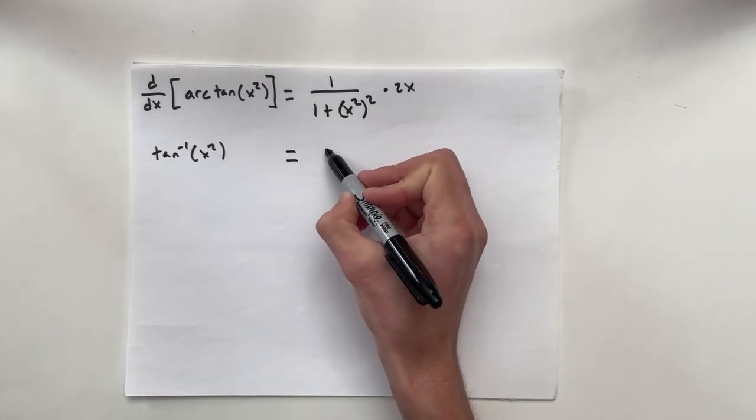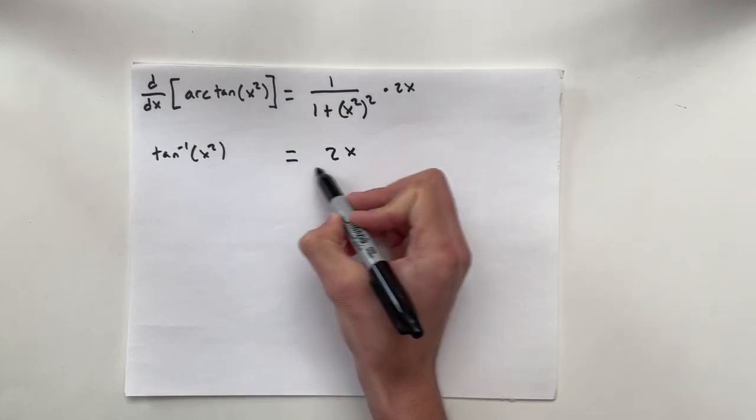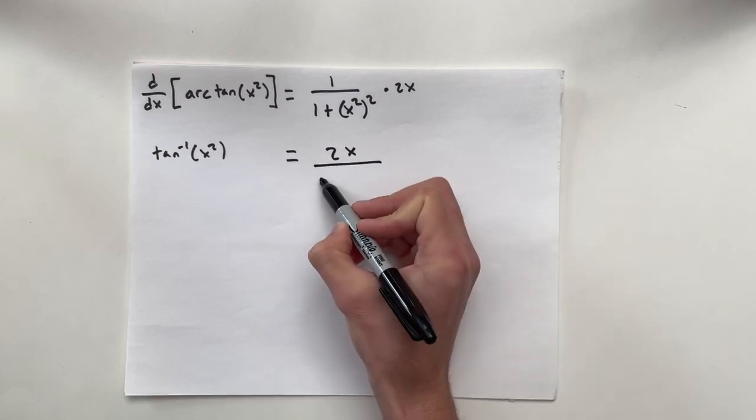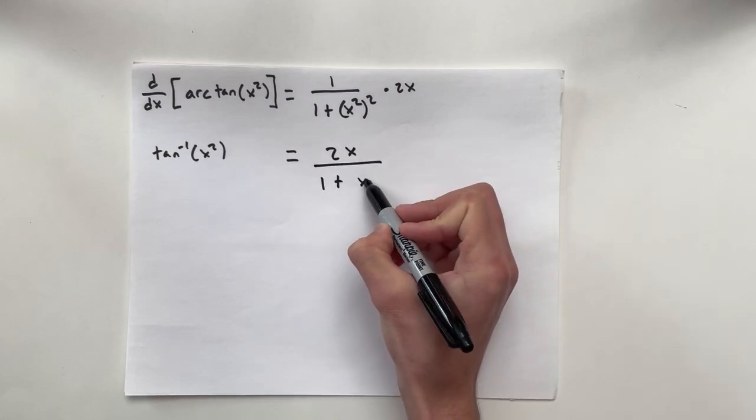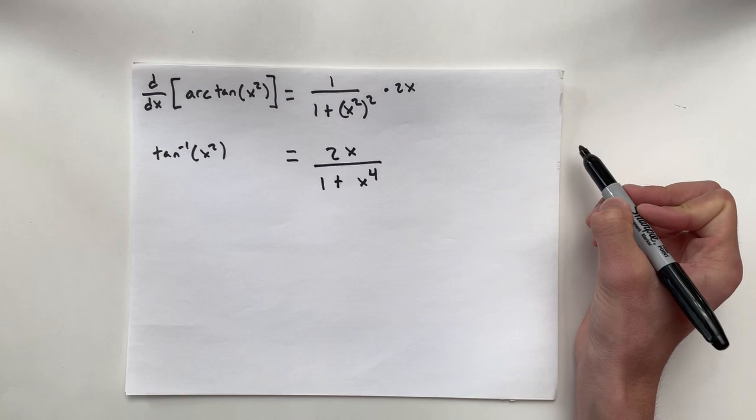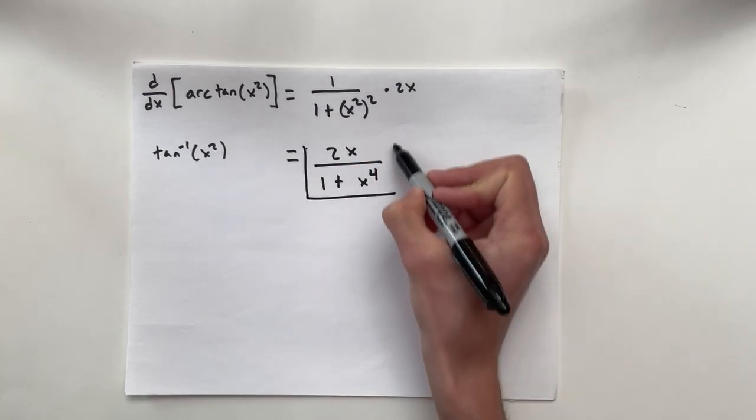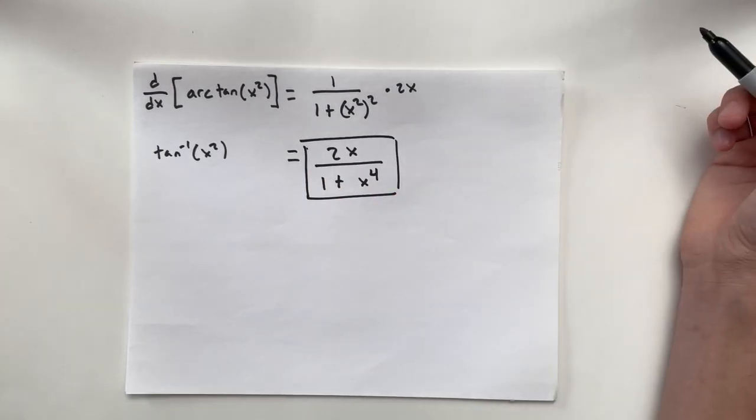When we solve that, we're left with 2x over 1 plus x to the fourth. And that is how you solve the derivative of arc tangent x squared.